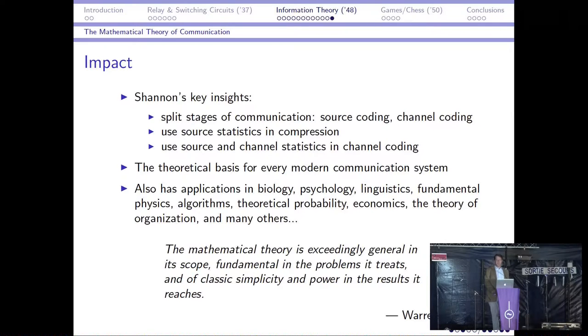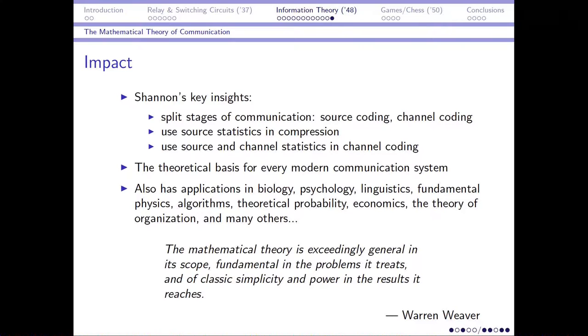Right, so to sum up information theory, Shannon's key insights were to split the stages of communication into the source coding, which achieves the efficient communication, and the channel coding, which achieves the effective communication. And if you want an analogy for these two stages, the analogy that Shannon came up with is in the same way that for an electronic circuit, we maximize power transfer by impedance matching the transmitter to the receiver. Then in information theory, we maximize the information transmission between source and receiver by matching the source to the channel in the way that he describes. Another example of his practical nature. He decided we should use source statistics in the compression, and also use the source and channel statistics in the channel coding. And really, this has formed the theoretical basis for every modern communication system that we have, and has applications throughout everything, really.